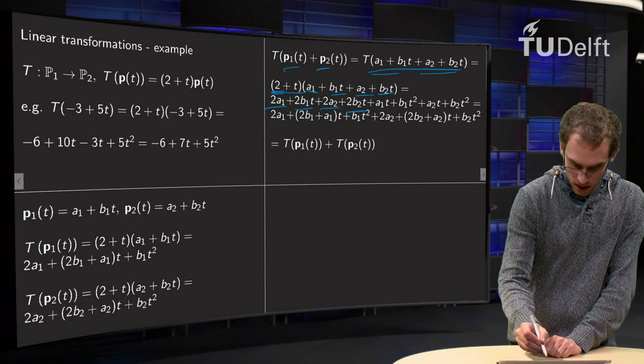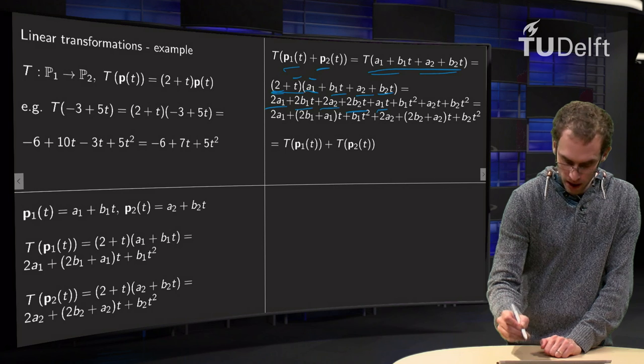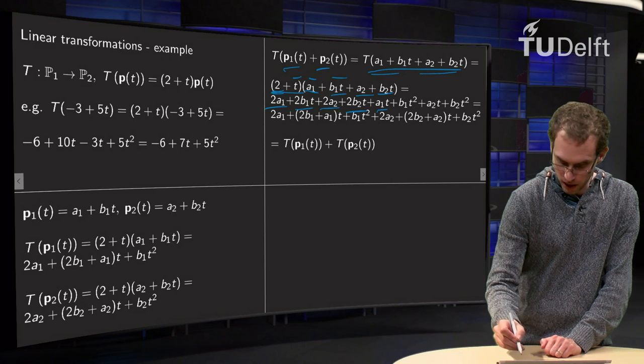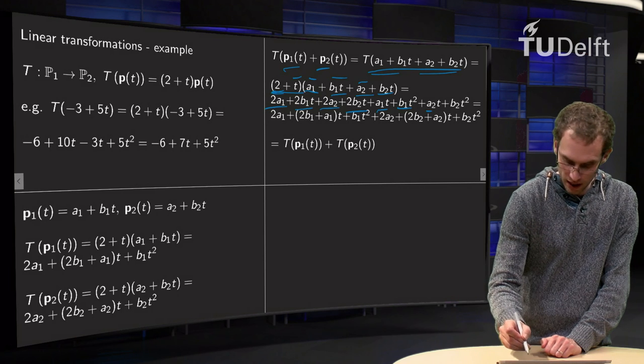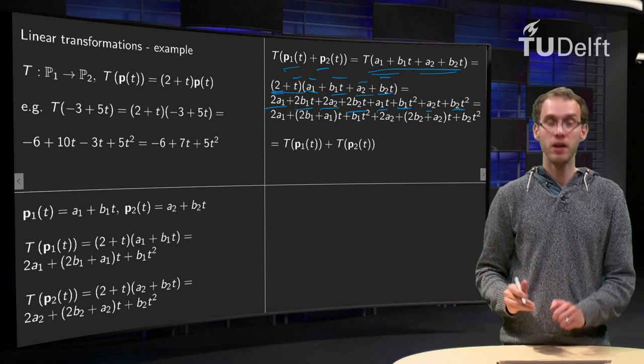Then we continue with the t: a t times a1 over there, a t times b1 times t over there, a t times a2 over here and a t times b2t over there. So there we go.